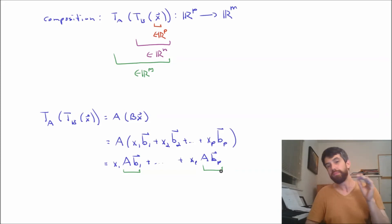And then the matrix A took n vectors to m vectors. So these things, they live inside of R^m. Alright, now, I think we should recognize this. What this is, is a linear combination of vectors.